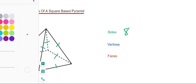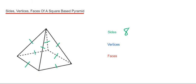Let's do the vertices next. The vertices are the corners of the shape—that's where the sides meet. We've got one at the top, and we've got two, three, four, five. So we've got five vertices.